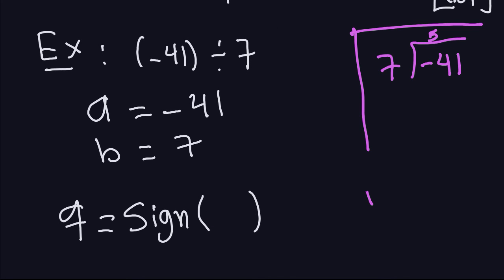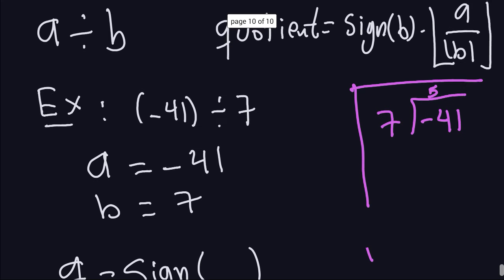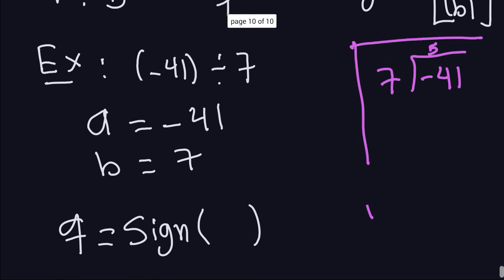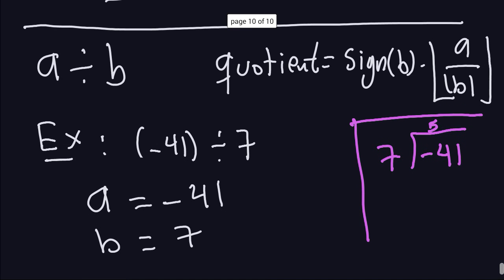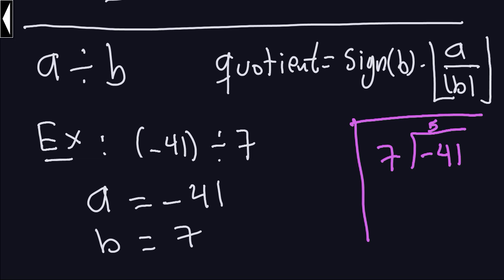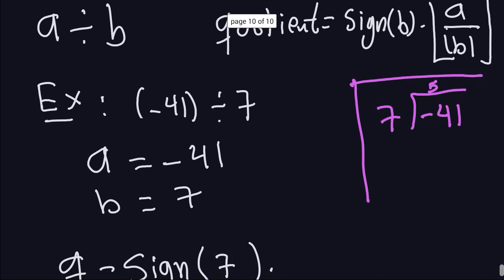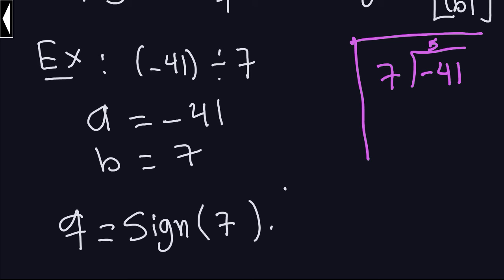So what is the quotient? I'm going to apply the formula. The quotient is the sign of B — B here is 7 — multiplied by the floor function of A divided by the absolute value of B. So I'm going to have to compute the floor function of negative 41 divided by the absolute value of 7.